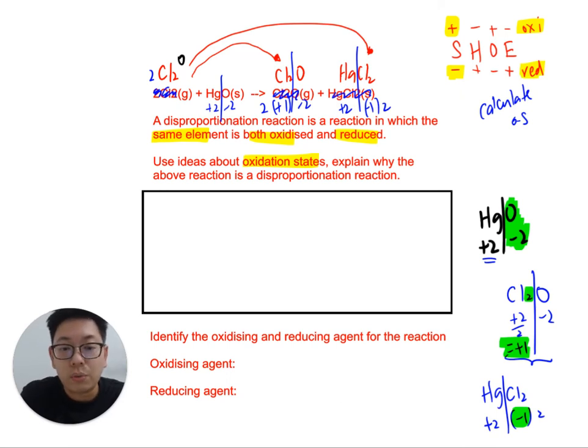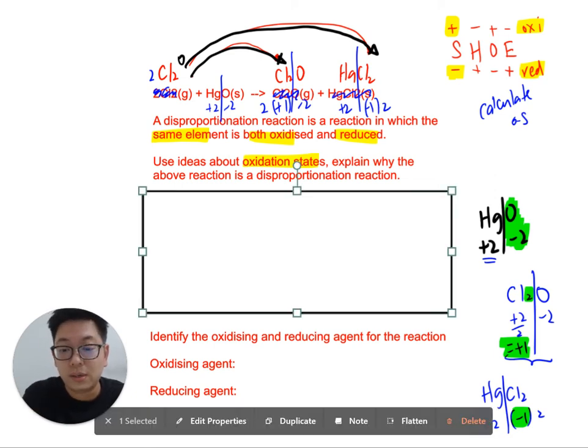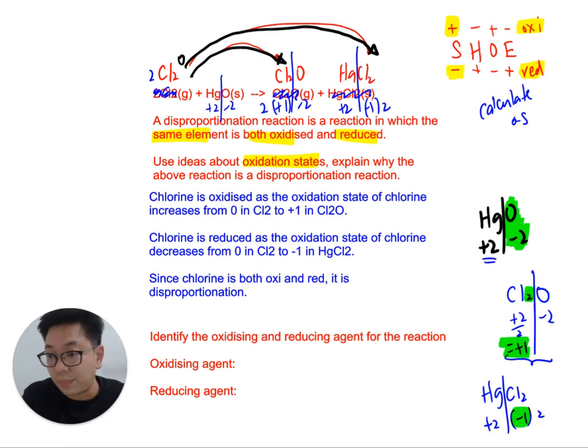All right, so notice how chlorine is oxidized to Cl2O. Chlorine is reduced to HgCl2. And why? Because the oxidation state increases and decreases. How do you phrase your answer? I've typed it out here.